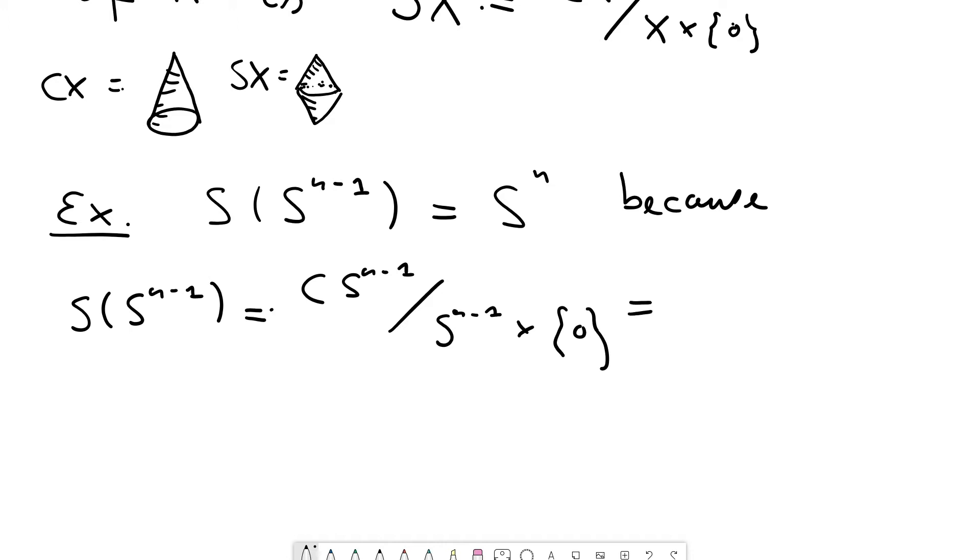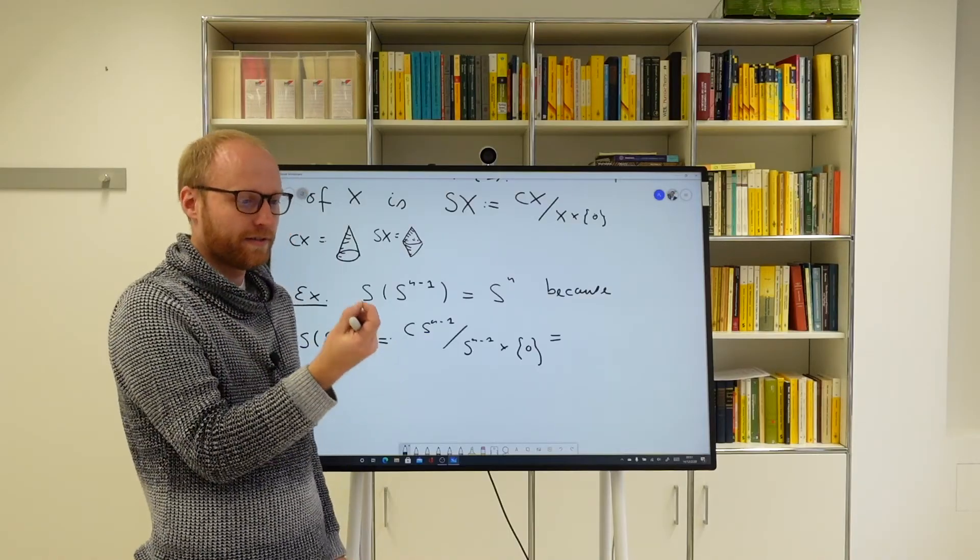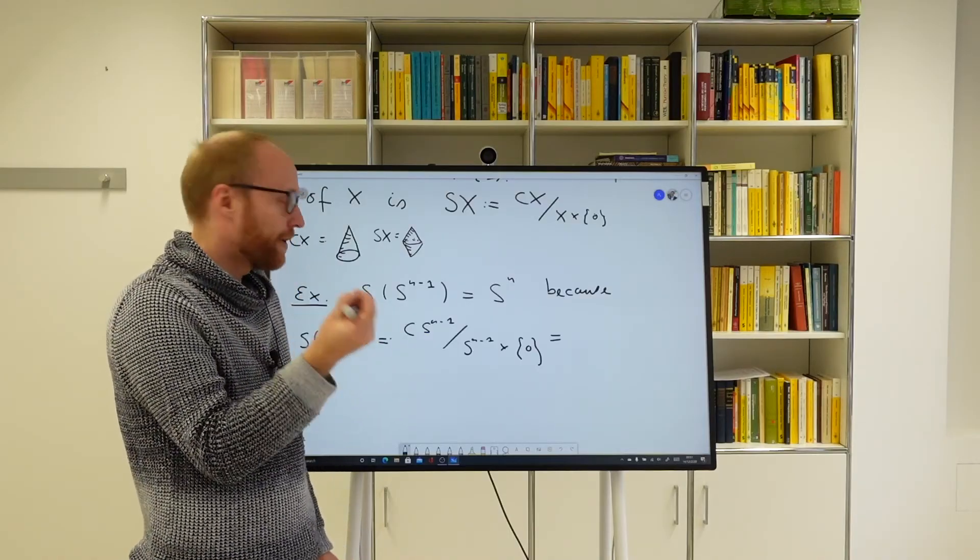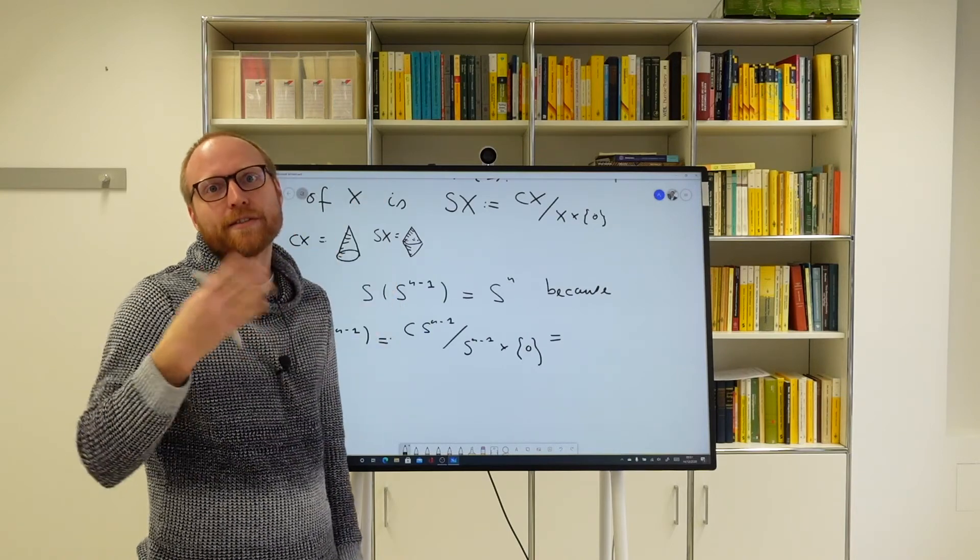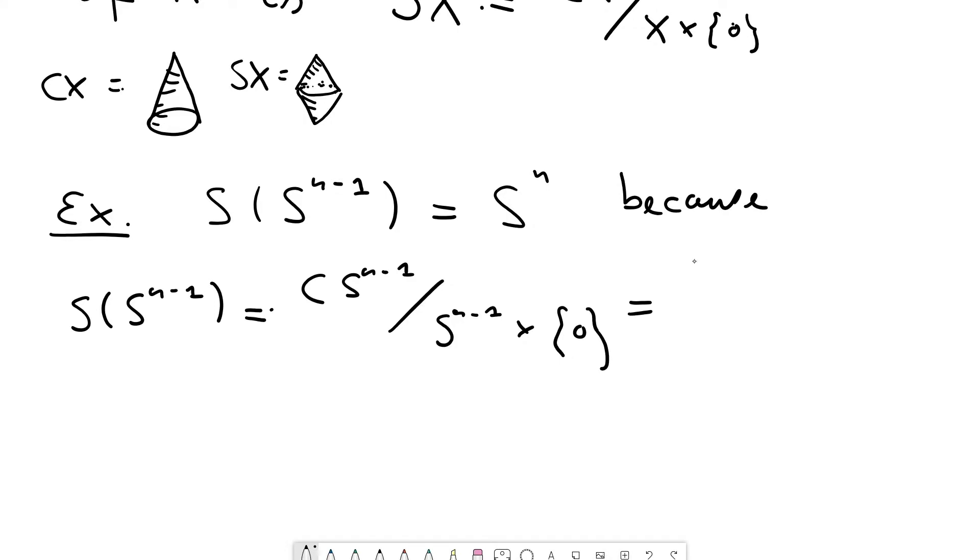But now if I take the cone on the n minus 1 sphere, you can just think of the tip of this cone as lying in the center of that sphere. And as such, you see that every point of the sphere is joined to the center point. So in other words, what you will get is just the n disk. So the cone of the n minus 1 sphere is really completely canonically or can completely be identified with the n disk.